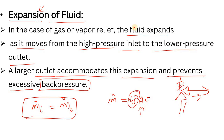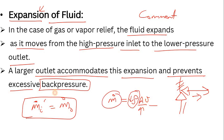If you have any doubt, please let me know in the comments box. Simply put: when the density at the outlet is lower due to expansion, to maintain the same mass flow rate, the product of area and velocity must compensate for this lower density. Since the outlet velocity increases but it is not enough to fully compensate, we increase the outlet area. That's why the outlet size will be higher.